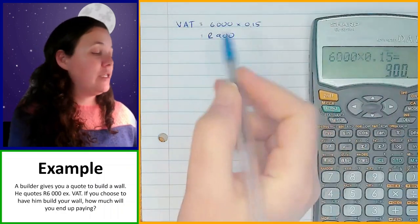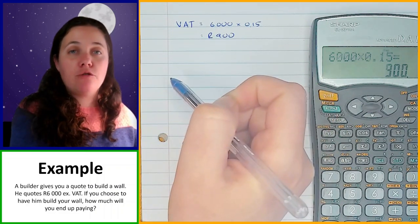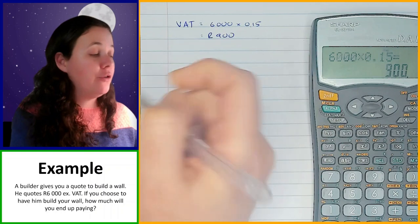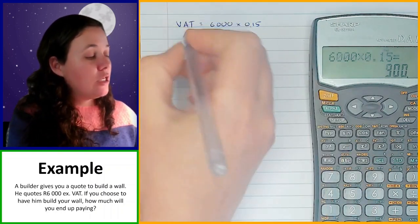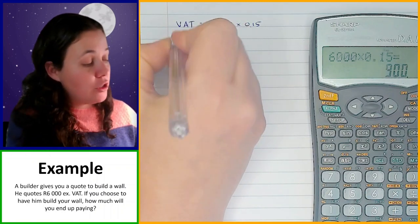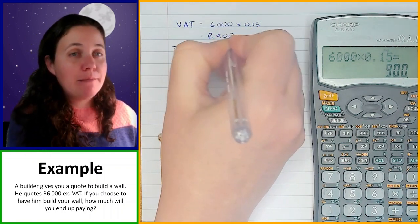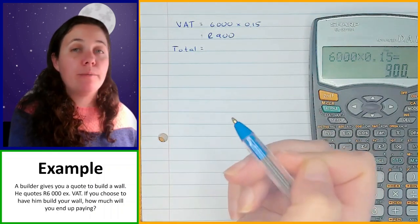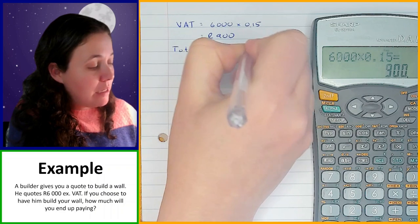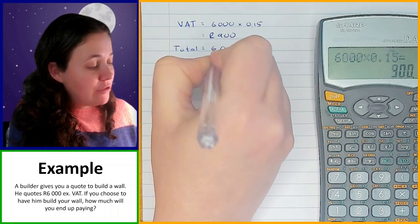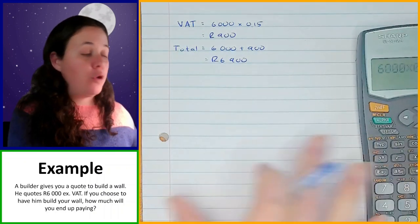So this is how much VAT you would pay on top of the 6,000 rand that the builder is charging you, and this VAT amount would then be paid to the government by the builder. To find out the total that you would pay, you take that VAT amount and add it to the amount the builder is wanting to charge you. So that's 6,000 plus 900, and that gives you 6,900.